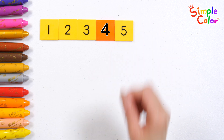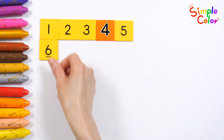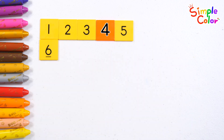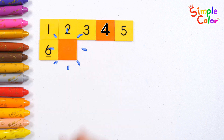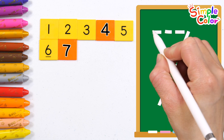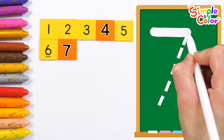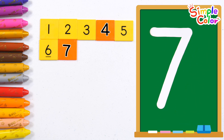5, 5, 6. Guess the correct number in the orange blank. That's right! 7. Write the number 7 on the board. 7.